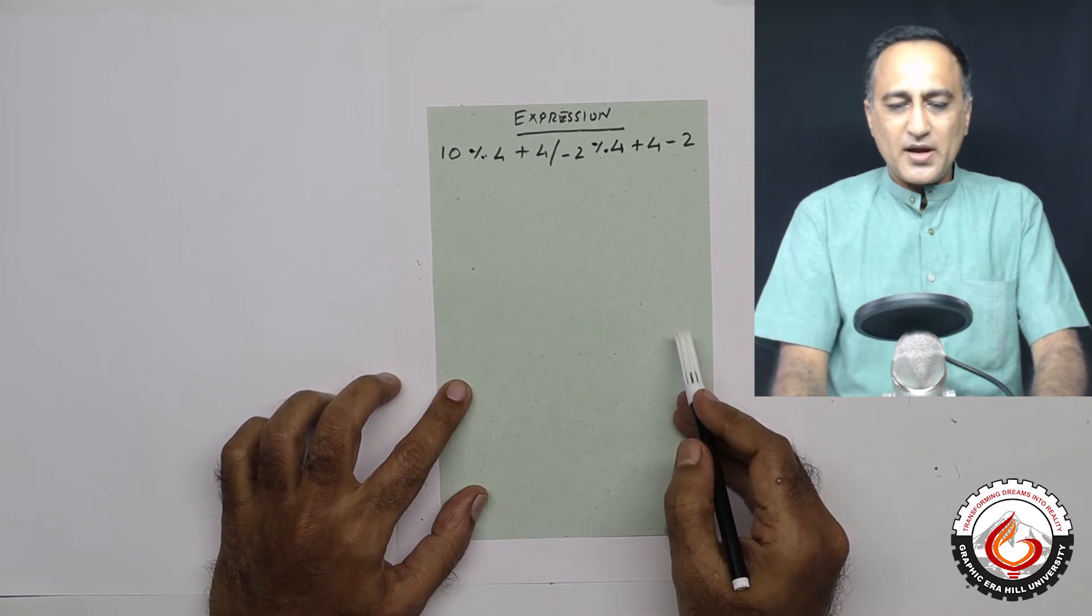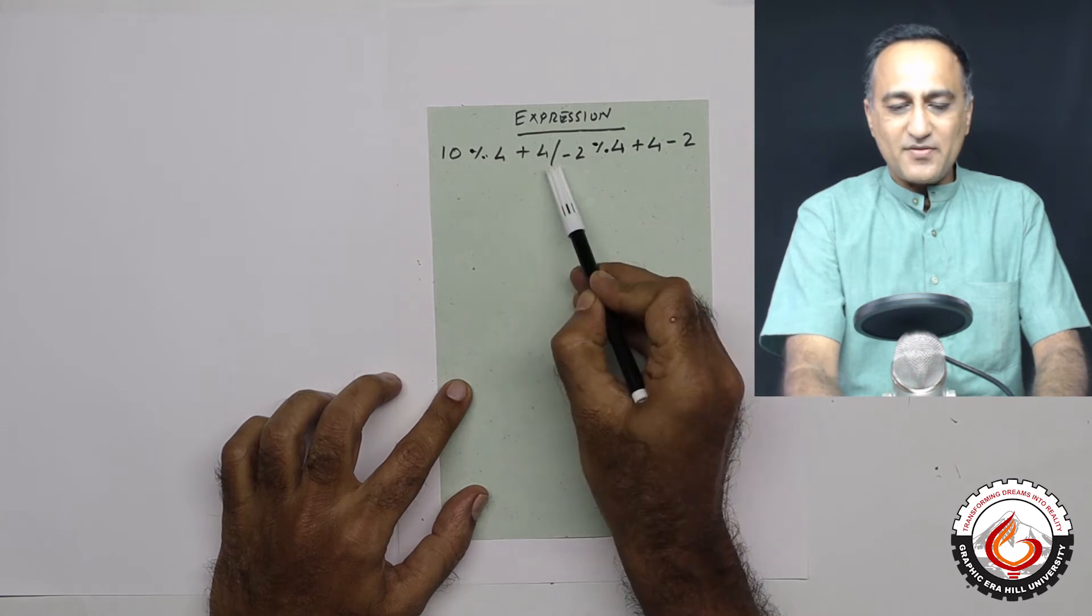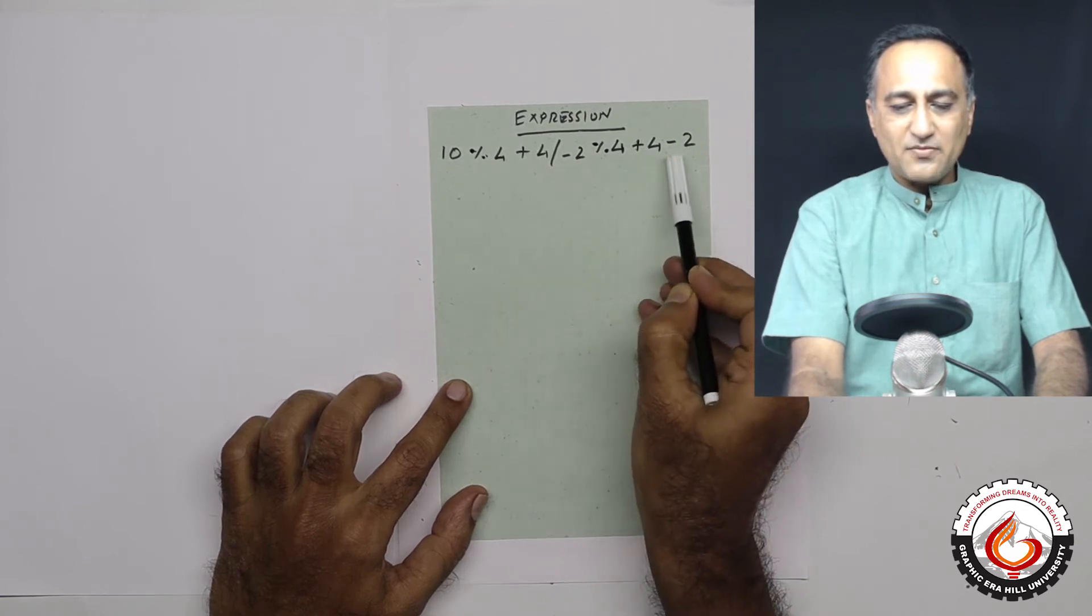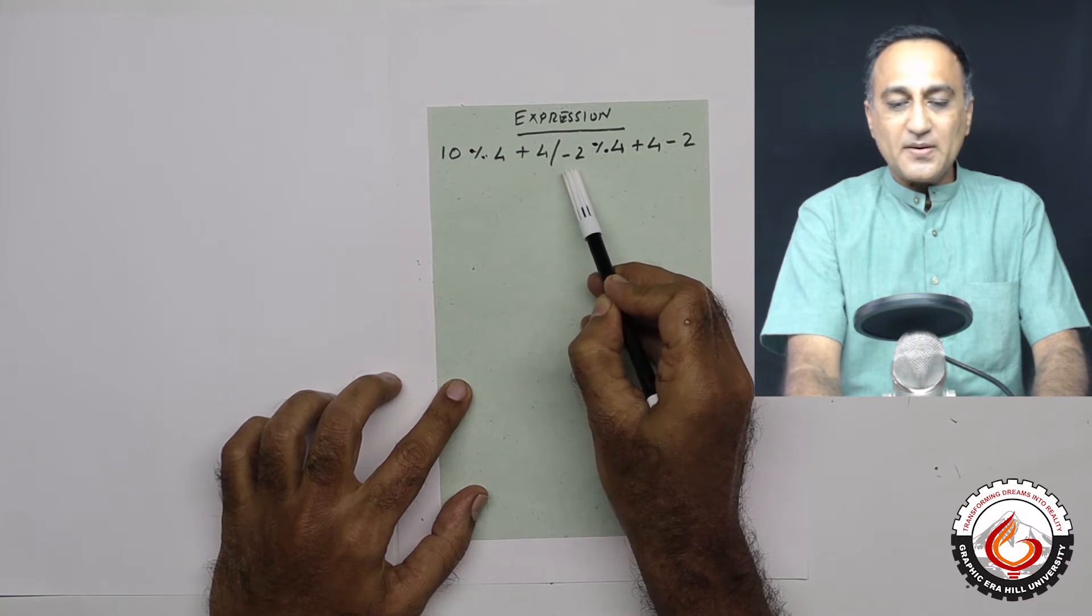Here we have a number of different operators: we have mod, we have division, we have plus, we have minus. But most importantly, we have a unary operator minus here.